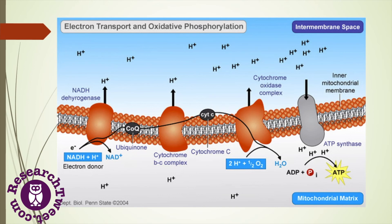In the final step of oxidative phosphorylation, H+ ions flow down their gradient back into the matrix through the enzyme ATP synthase, which harnesses the flow of protons to synthesize adenosine triphosphate from adenosine diphosphate.